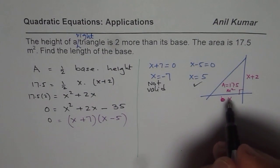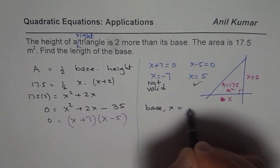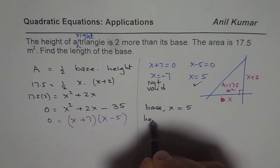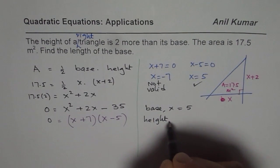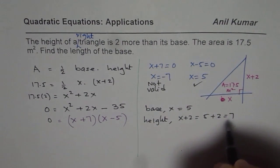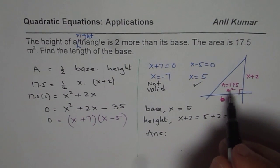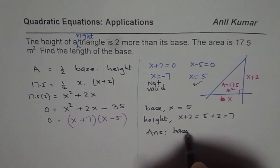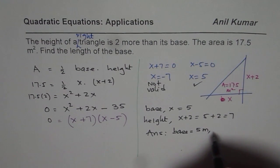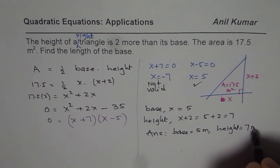So the solution is that the base x equals 5 and height is x plus 2 which is 5 plus 2 equals 7. When we write down the answer, we should include units. Since the area is in meter square, base equals 5 meters and height equals 7 meters.